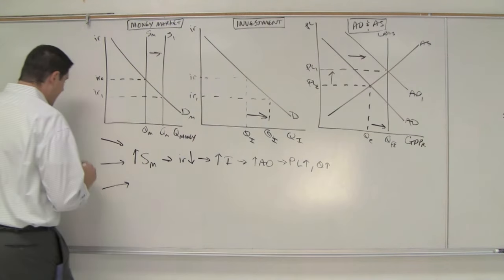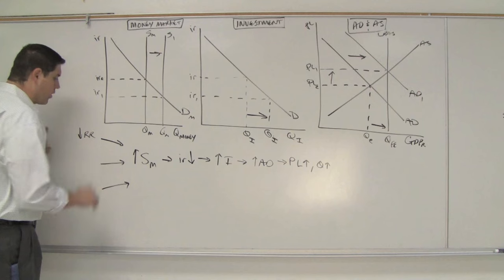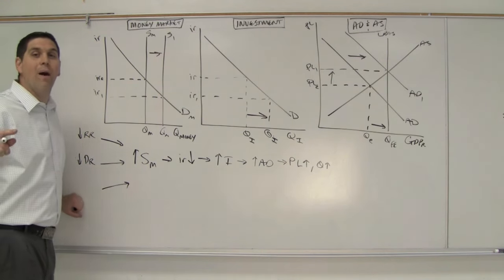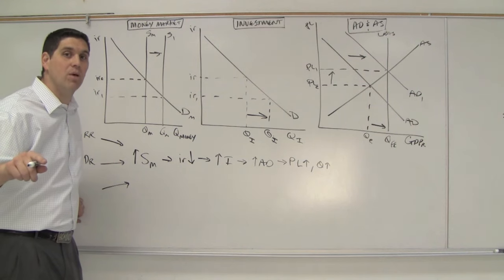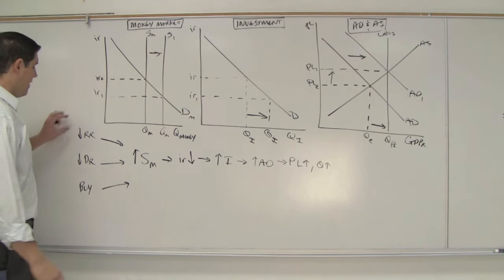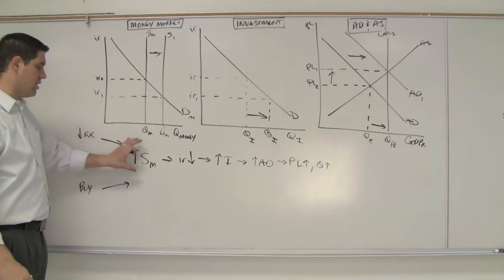The first thing they could have done is they could have lowered the reserve requirement. They could have lowered the discount rate. Or is it buy or sell? Do you remember? Buy or sell bonds? Well, the answer is they could buy bonds. If any of these three things happen, that would cause this to happen. And this whole thing added together is called monetary policy.